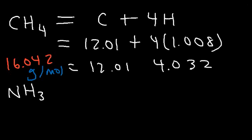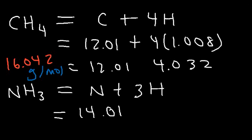Now, let's do the same for ammonia, NH3. So we have one nitrogen atom and three hydrogen atoms. Nitrogen has an atomic mass of 14.01, and for hydrogen, we already know that it's 1.008.